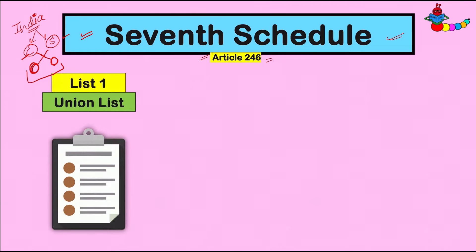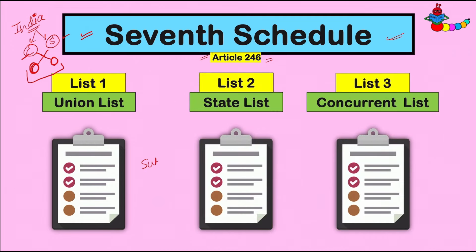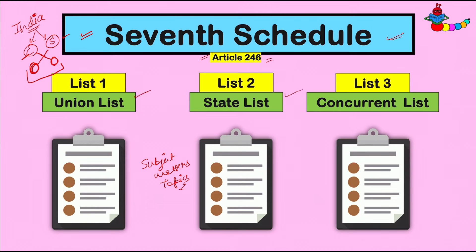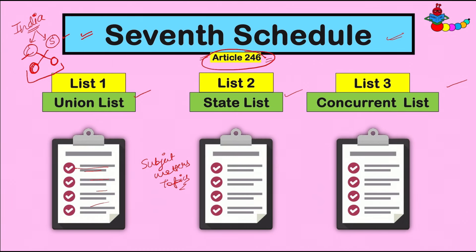तो तीन अलग-अलग lists बनाई गईं, जिनमें अलग-अलग subject matters और topics लिखे गए। इन lists का नाम रखा गया Union List, State List और Concurrent List। Article 246 बोलता है कि Union List में जो भी topics mentioned होंगे, उन पे law बनाने की permission होगी Center को। मतलब Center ही इन चीज़ों पे law बना पाएगा।